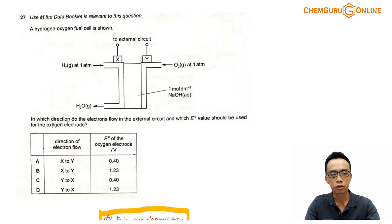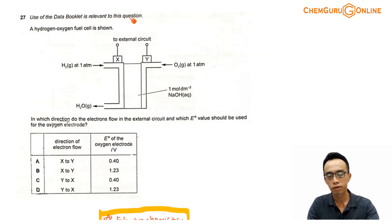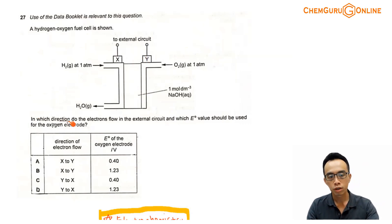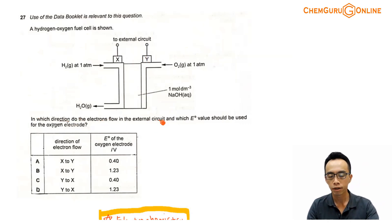Now question 27 — the use of the data booklet is relevant to this question. A hydrogen-oxygen fuel cell is shown, so the setup is here. In which direction do the electrons flow in the external circuit, and which E-value should be used for the oxygen electrode?